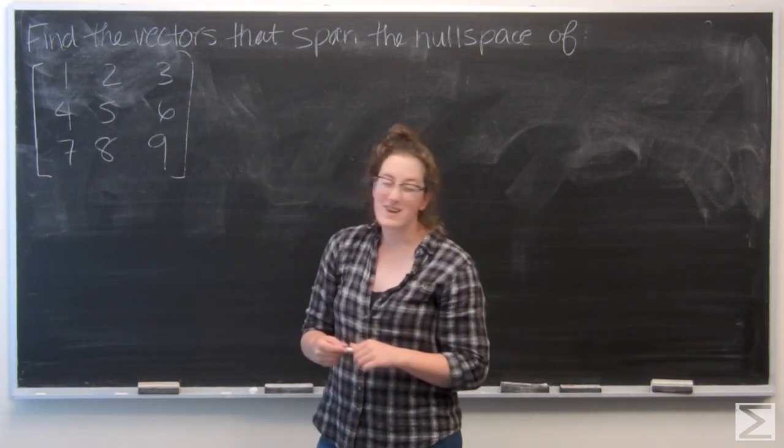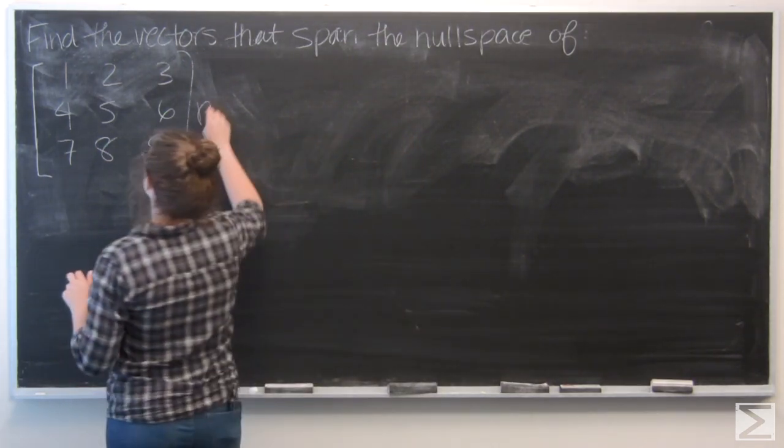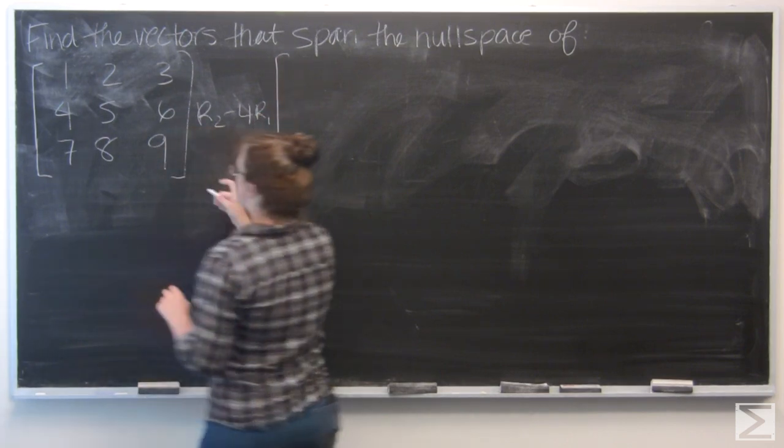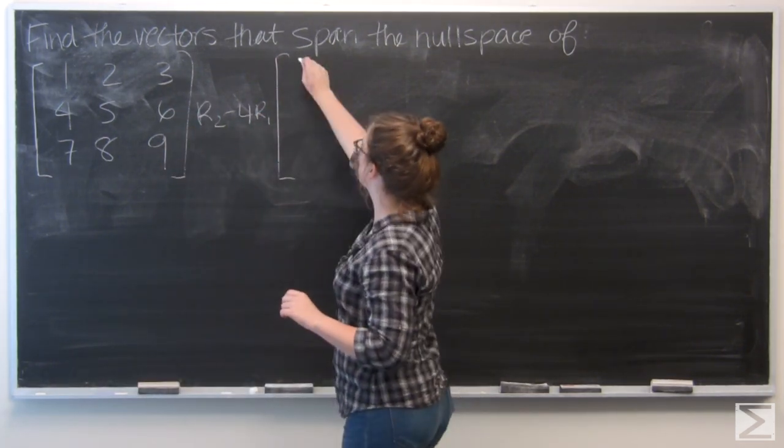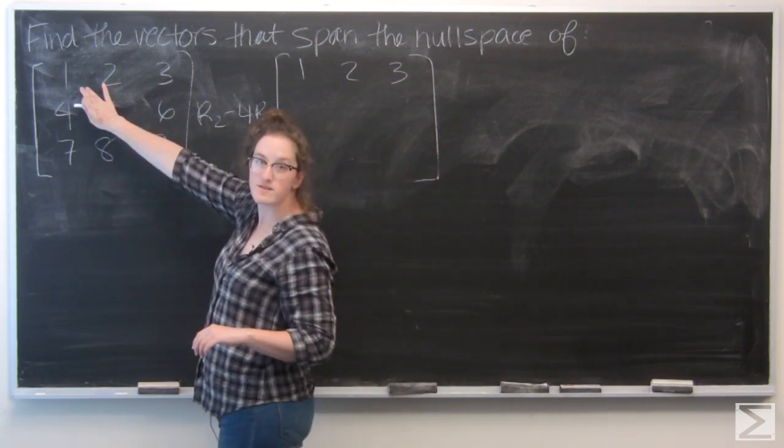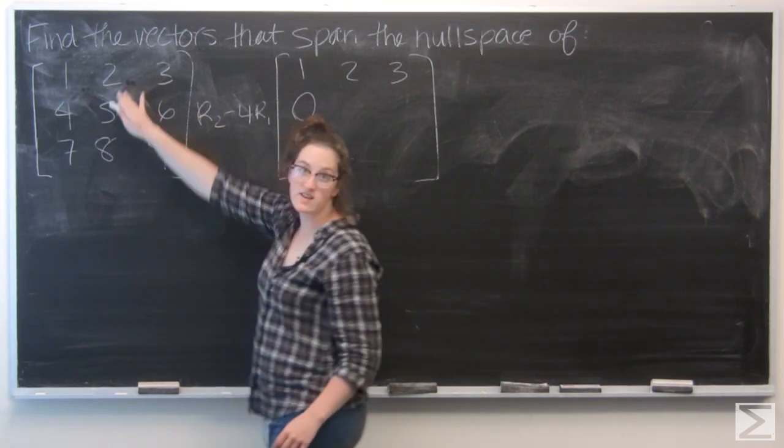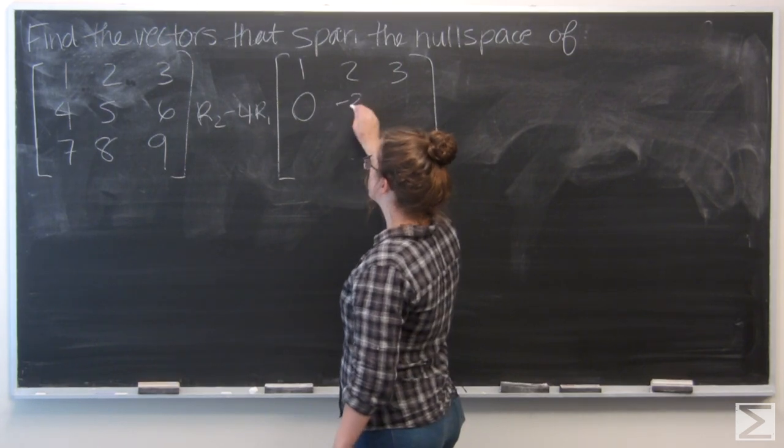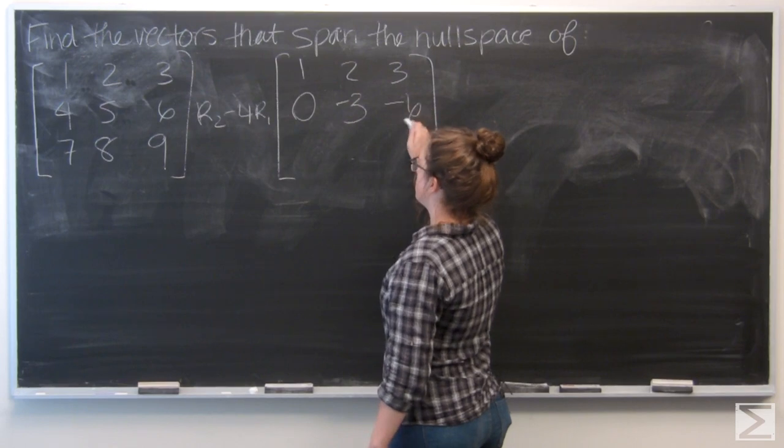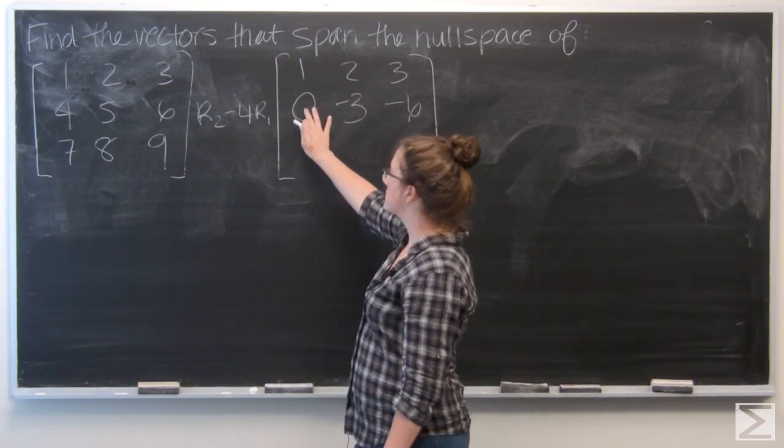So to start, I'm going to subtract 4 times the first row from the second row. So I'm just going to carry the first row through. So I have 4 minus 4 gives me 0, 5 minus 8 gives me negative 3, and 6 minus 12 gives me negative 6. And so I've cleared the first term out of the second row.